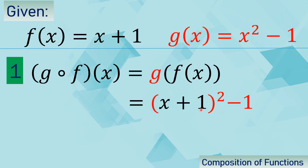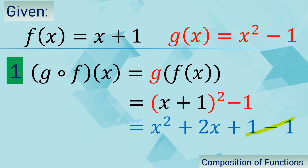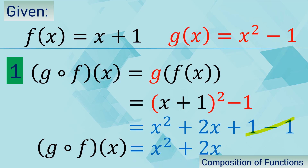We square x plus 1, and that gives us x squared plus 2x plus 1 minus 1. We know that 1 minus 1 is 0. That is why g of f of x, or g composed of f of x, is equal to x squared plus 2x. This is now the new function formed after g composed of f of x.